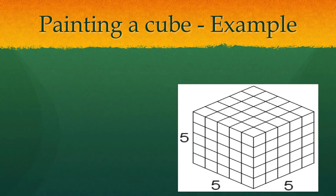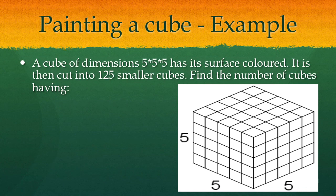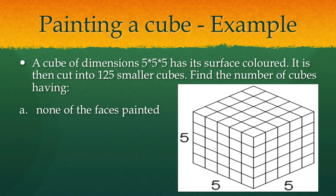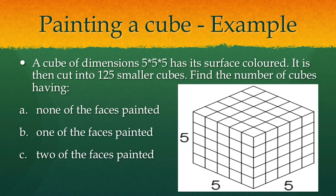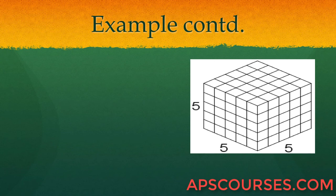Painting a cube: Consider a cube with dimensions 5×5×5. All the surfaces of this cube have been colored, and then it is cut into 125 smaller cubes of 1×1×1. We need to find the number of cubes having: no faces painted, one face painted, two faces painted, and all three faces painted. Let's look at the first part — no face painted.